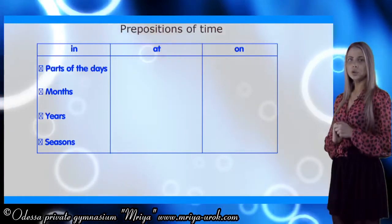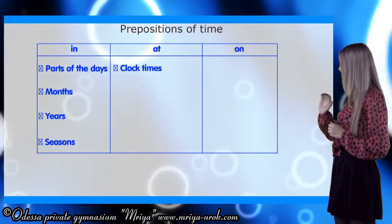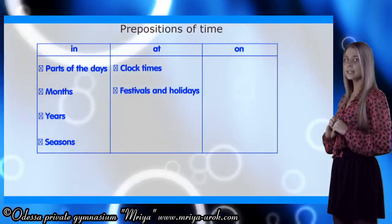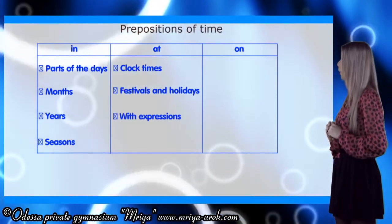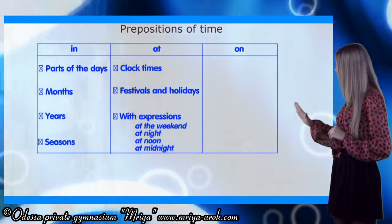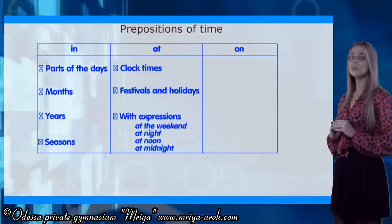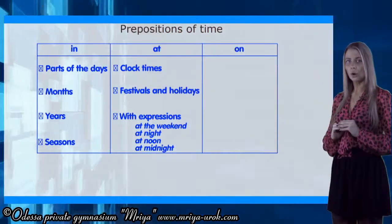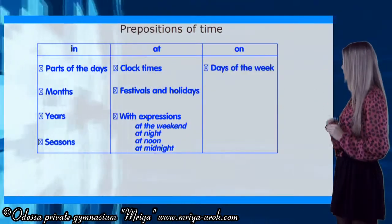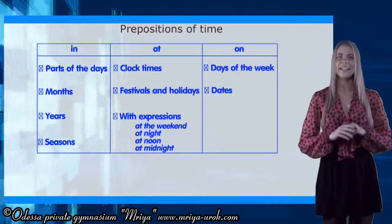We use preposition 'at' with clock times, festivals, and holidays, and expressions: at the weekend, at night, at noon, and at midnight. And we use preposition 'on' with days of the week and dates.